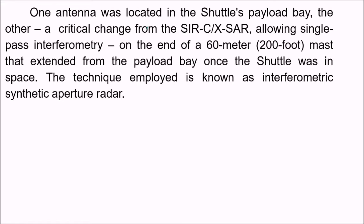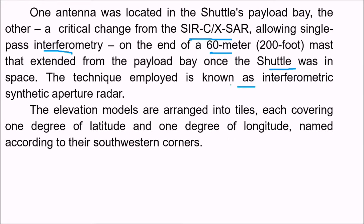The SRTM payload was outfitted with two radar antennas. One antenna was located in the shuttle payload bay; the other — a critical change from the previous design — was on the end of a 60-meter (200-foot) mast that extended from the payload bay once the shuttle was in space, allowing single-pass interferometry. The technique employed is known as Interferometric Synthetic Aperture Radar, and radar interferometry provides the elevation values.